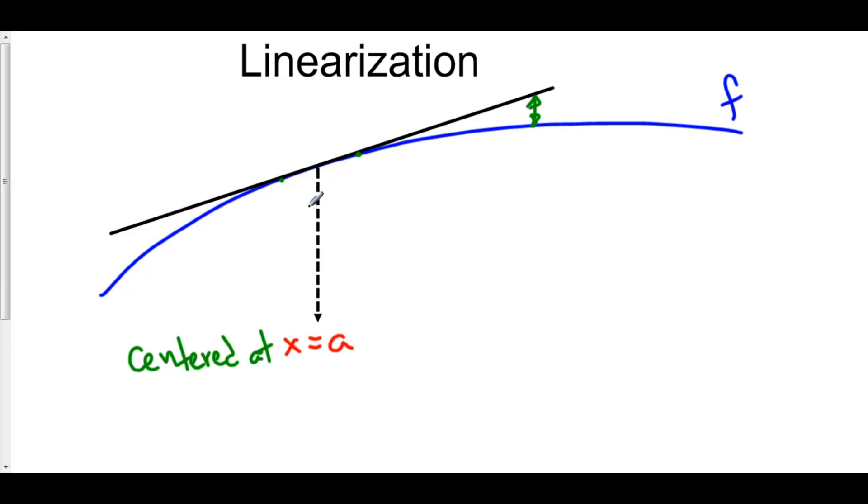Now, how can we find this linearization? Well, that's the easy part. That's the awesome part is this is just a tangent line. Well, how do you find a tangent line? Well, there's two things that you need for a tangent line. You need a point.